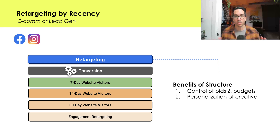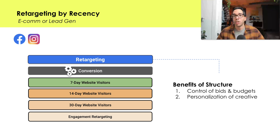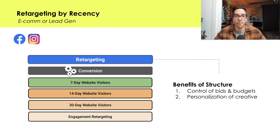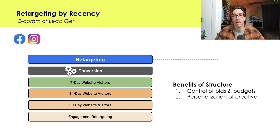I have a more sophisticated version — two different versions — I want to show you. But this is quite standard, and this is retargeting by recency. The whole concept here is that somebody who comes to your website in the last seven days is going to have a higher intent to purchase than someone who hasn't been on your website in the last 21 days. We've typically seen drop-offs between seven days and then another drop-off at 14 days. This setup allows the algorithm to maximize dollars against that seven-day audience.